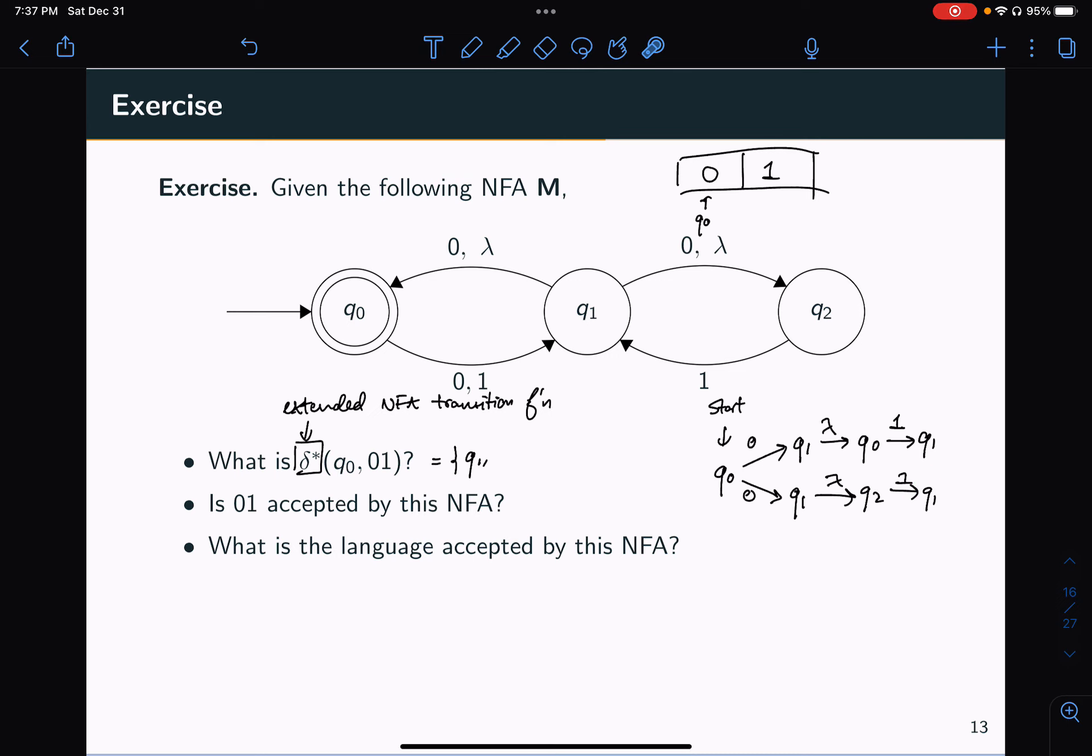The nifty trick here is that what I can do once I'm at Q1 is I can use another lambda transition, because remember, the lambda transitions allow you to transition to different states for free. So what I could have done instead is, I could have gone to Q1 with a zero. Then I could have used the lambda transition to go to Q2.